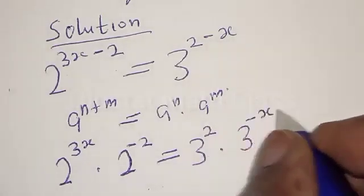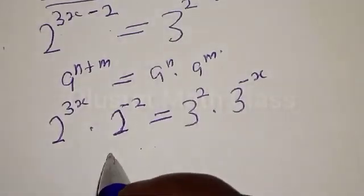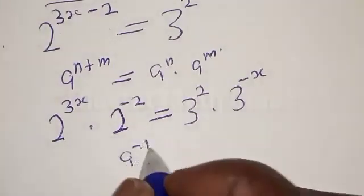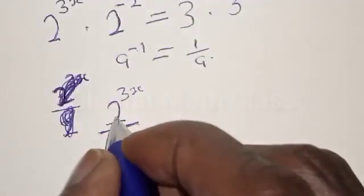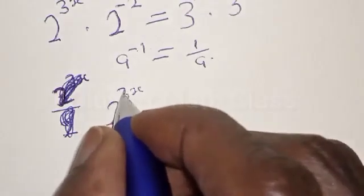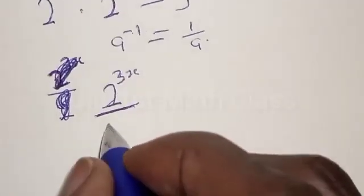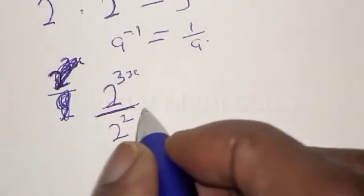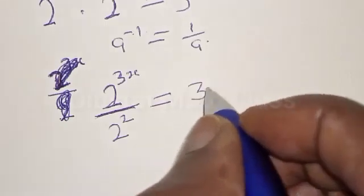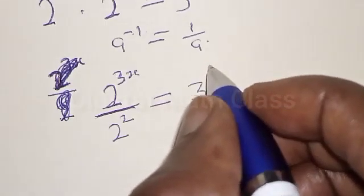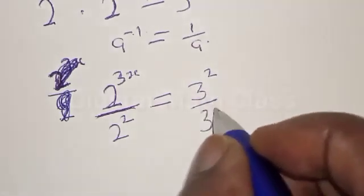Remember, if you have a raised to power minus 1, that is the same as 1 over a. Therefore we have 2 raised to power 3x over 2 raised to power 2, equal to 3 raised to power 2 over 3 raised to power x.